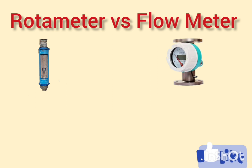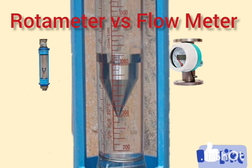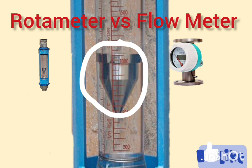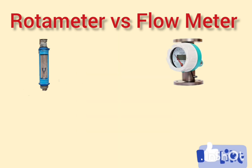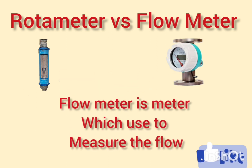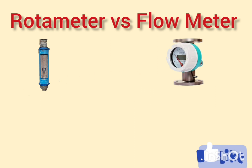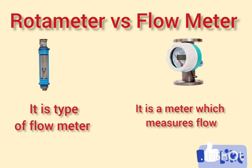A rotameter consists of a tapered tube with a float inside that rises or falls depending upon the flow. A rotameter is one type of flow meter — a flow meter is a meter which we use for the measurement of flow, and a rotameter is one specific type that operates on the principle of variable area.